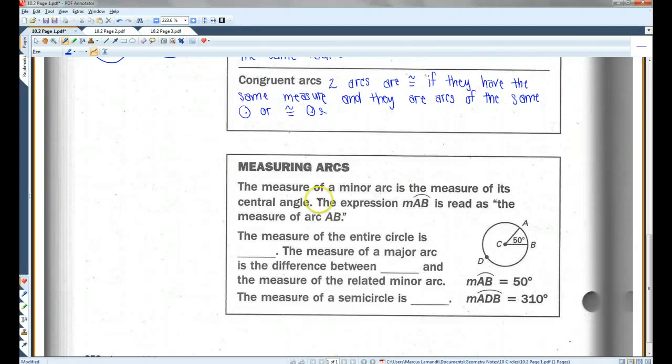Measuring arcs. The measure of a minor arc is the measure of its central angle, as we already discussed. The expression M with AB with an arc over it is read as the measure of arc AB. So, kind of like when we have the measure of angle ABC, very similar. This little M means measure.